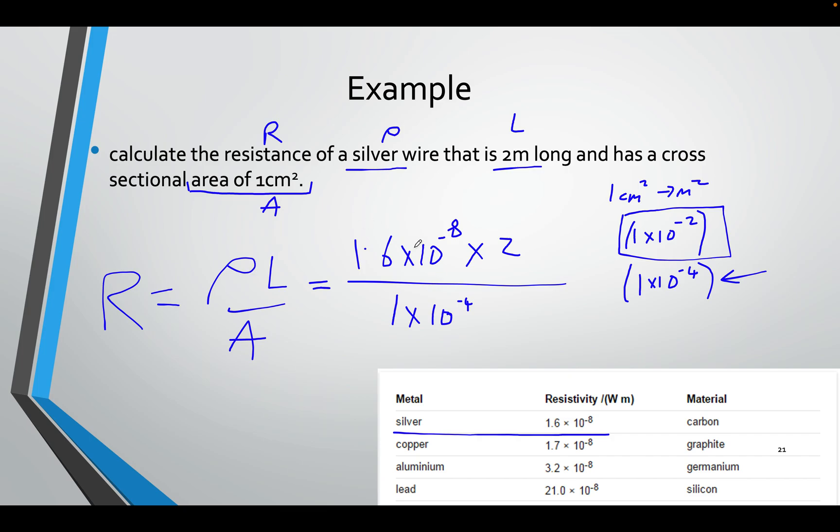Multiplied by the length, 2 metres, right here. Area is 1 centimetre squared.